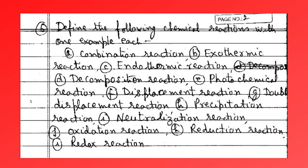Define the following chemical reactions with one example each: combination reaction, exothermic reaction, endothermic reaction, decomposition reaction, photochemical reaction, displacement reaction, double displacement reaction, precipitation reaction, neutralization reaction, oxidation reaction, reduction reaction, and redox reaction.